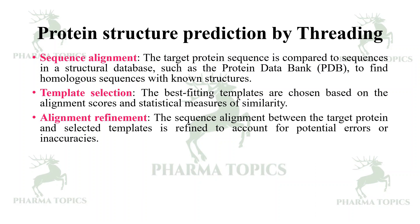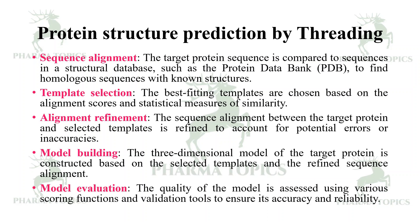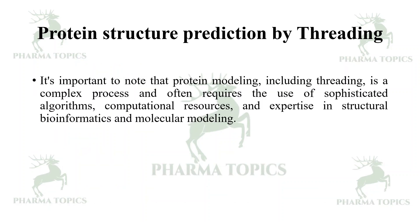Next is alignment refinement: the sequence alignment between the target protein and the selected template is refined to account for potential errors or inaccuracies. Then model building: the three-dimensional model of the target protein is constructed based on the selected templates and the refined sequence alignment. Finally, model validation: the quality of the model is assessed using various scoring functions and validation tools to ensure its accuracy and reliability.